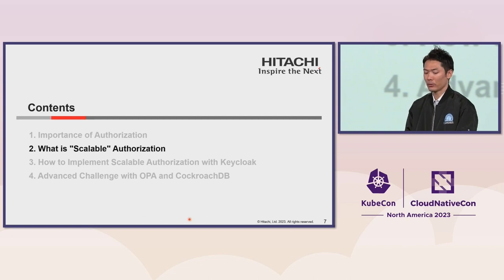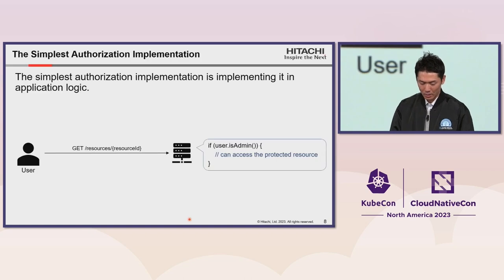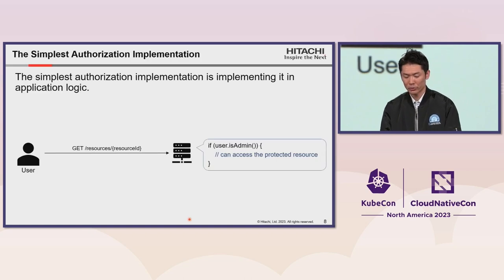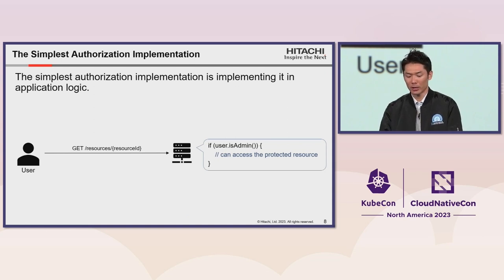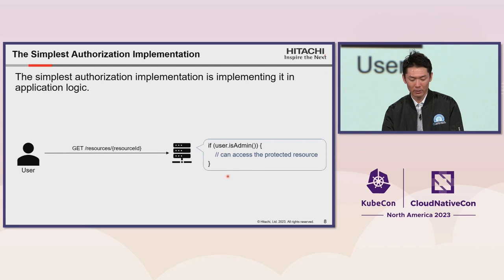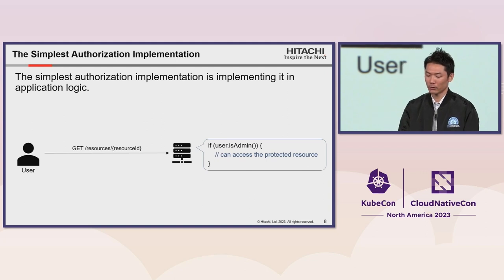Next, I describe what scalable authorization is. The simplest authorization implementation is implementing it in application logic. For example, when you'd like a user to access a protected resource if they are an administrator, you can implement it like this: if user.isAdmin, then user can access the protected resources. This is a common implementation that we often see, and there is nothing wrong with implementing authorization this way.